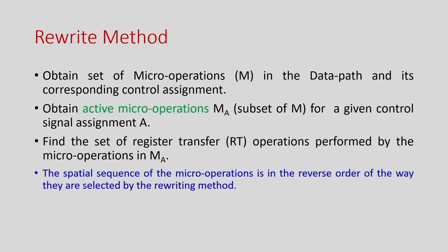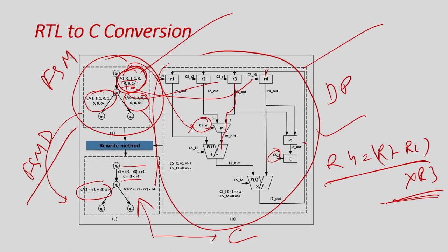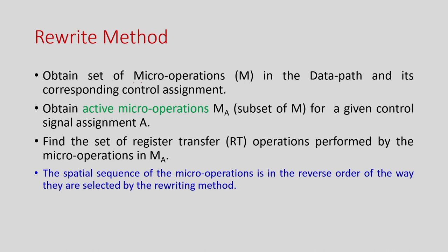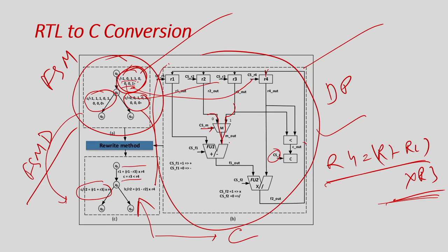To extract register transfer operations, we apply a method called rewriting. In the datapath, data flow is controlled by control signals. For a MUX, two micro-operations are possible: either one value comes to the output or another, controlled by the select signal. Step 1 is to identify all micro-operations — the minimum data flow from input to output of any component — and their corresponding control signal values. For example: M_out = R2_out if select = 0, and M_out = R3_out if select = 1.